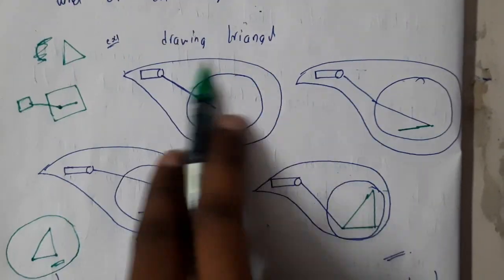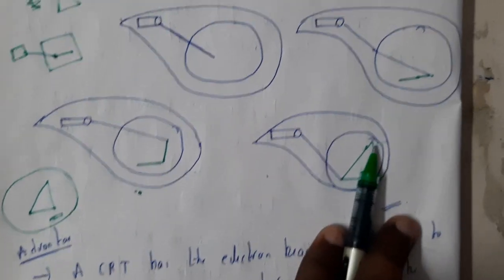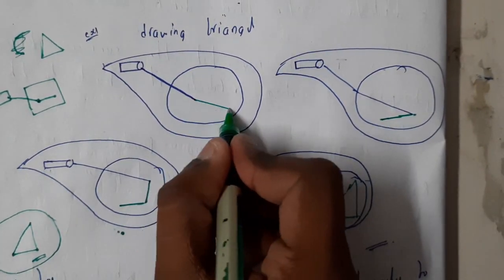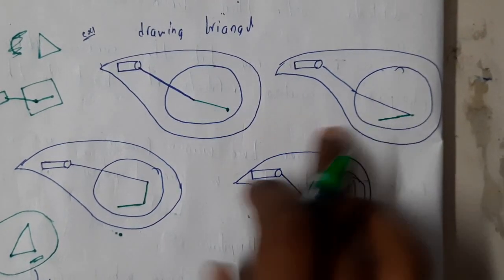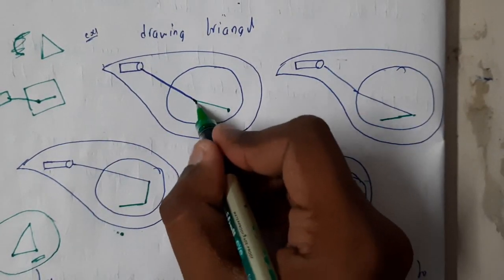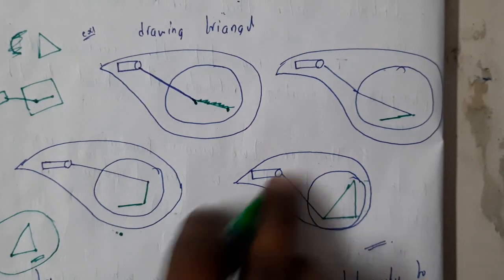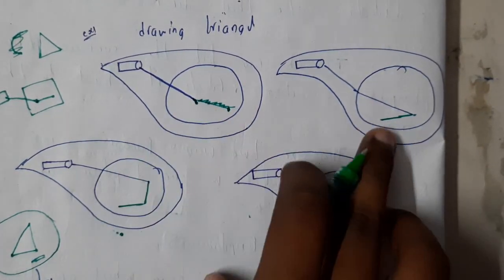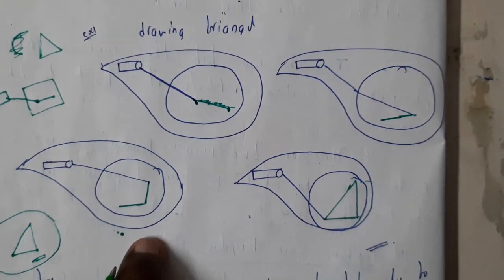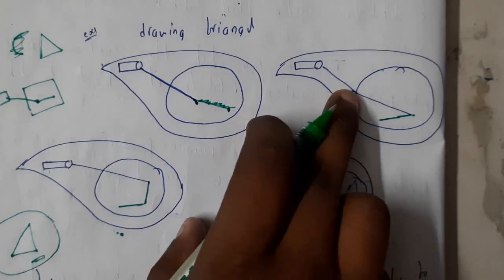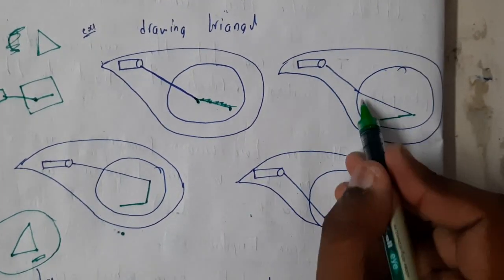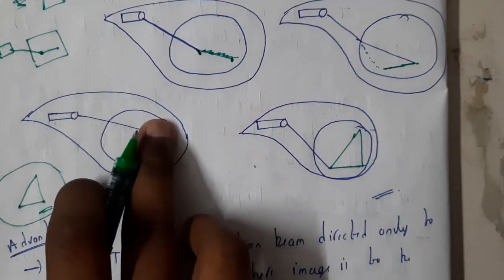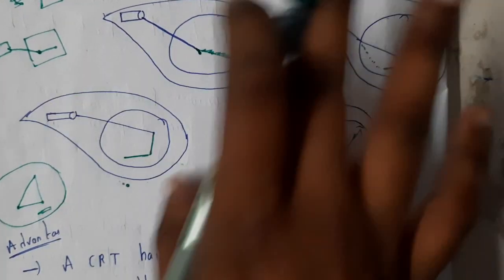I hope everyone got this. Let us assume we are drawing a triangle - in this way we can draw a triangle. This line should be a bit far, because I started from here to here. This point should be connected to here, and in the next step we will be moving till here. I hope everyone got a clear idea on that.